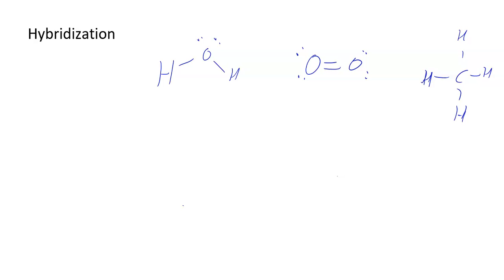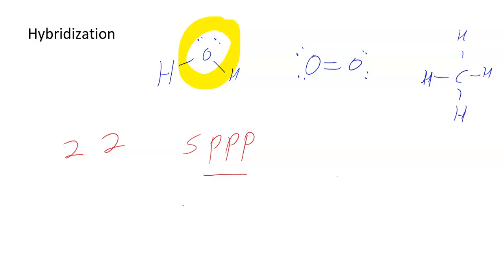Hydrogen doesn't have a hybridization because it only has one pair of electrons, so we ignore all hydrogens. Unlike VSEPR theory where only central atoms have shapes and angles, in hybridization every non-hydrogen atom can have a hybridization. Looking at the oxygen: it has two lone pairs and two bonds, so there are four positions sticking out in space. To make those four positions you combine one s orbital and three p orbitals — that's sp3 hybridized.